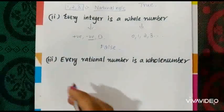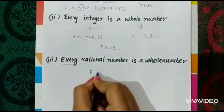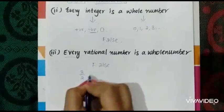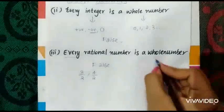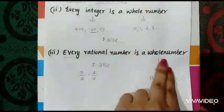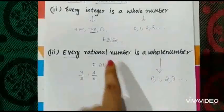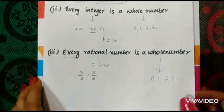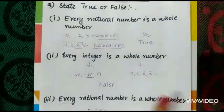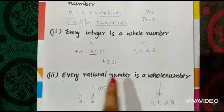Our 3rd and final question for this exercise: every rational number is a whole number. This statement is false. Take a rational number like 3/2 or 4/2. Whole numbers are 0, 1, 2, 3, and so on. Whole numbers do not include any fractions, so the statement is false. But note: every whole number is a rational number. To conclude: every natural number is a whole number — true. Every integer is a whole number — false, but every whole number is an integer. Every rational number is a whole number — false, but every whole number is a rational number.